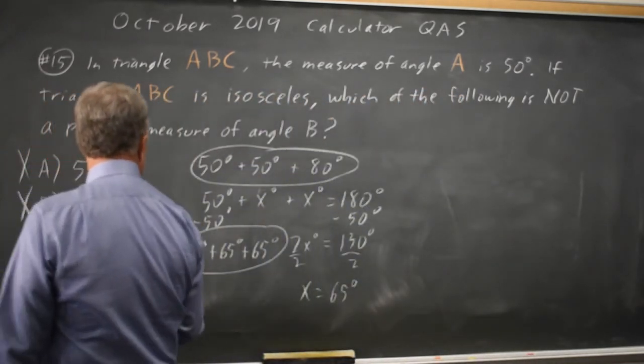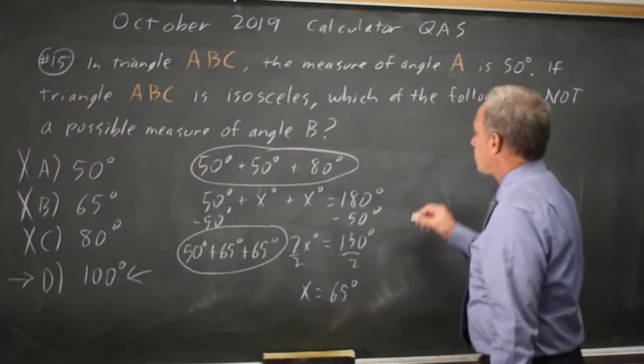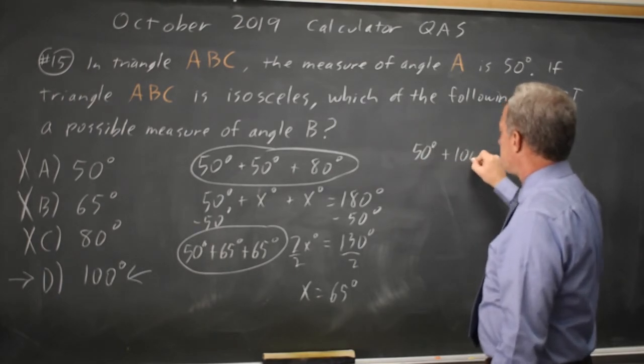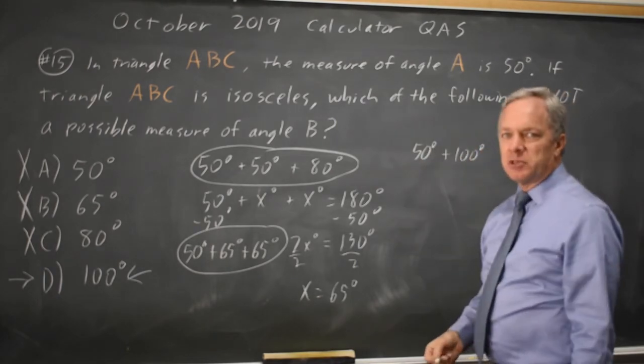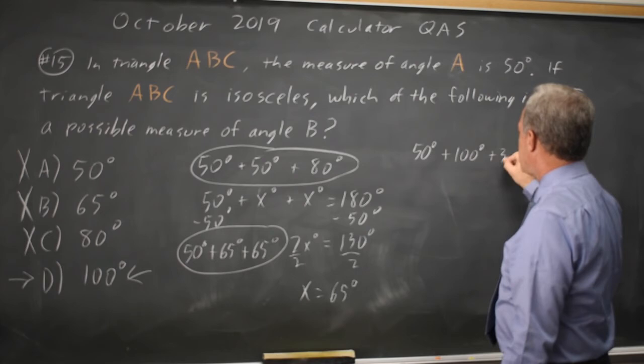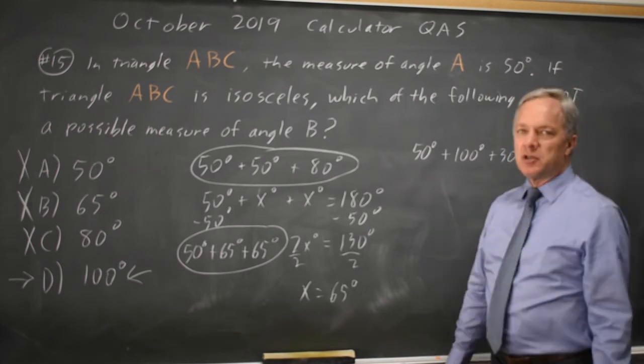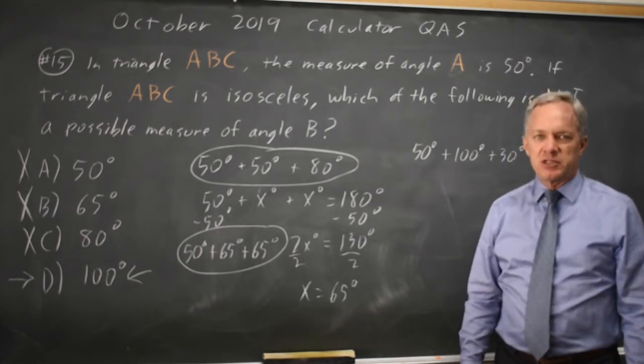which means choice D must be the value that's not possible, and that makes sense. If we have a 50-degree and a 100-degree and your angles add up to 180, the third one has to be 30 degrees, so no two angles are equal,